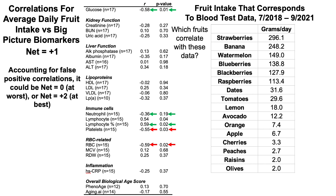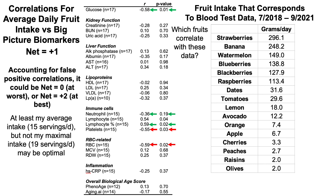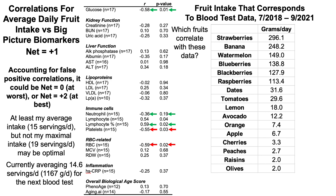That's three going in the right direction and two in the wrong direction — a net score of plus one. Accounting for false positives, it could be net zero at worst or net plus two at best. That suggests at least my average intake but not my maximal intake, so somewhere in the range of 15 to maybe 17 servings of fruit per day may be optimal based on these data.